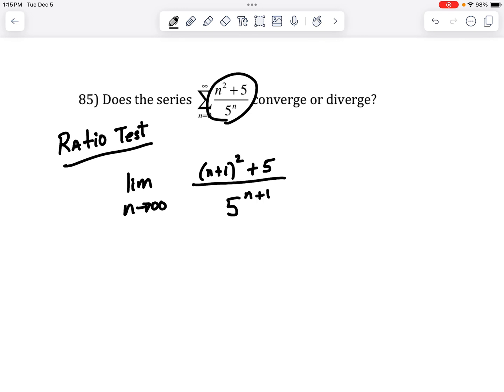So replace each of the n's with an n plus 1, and then divide by the original function. Well, since we're dividing by a fraction, you can save a step by saying that means if you're dividing by a fraction, you invert and multiply.